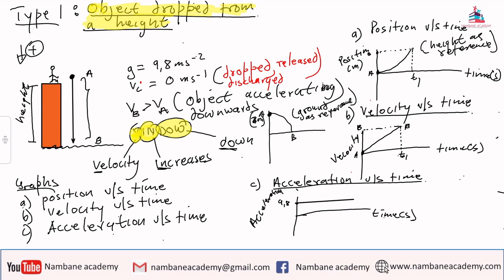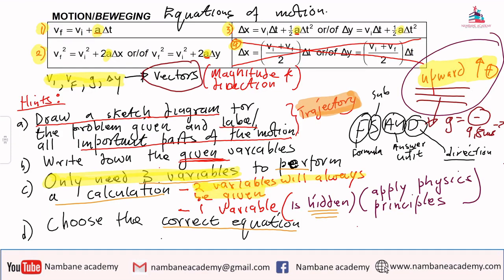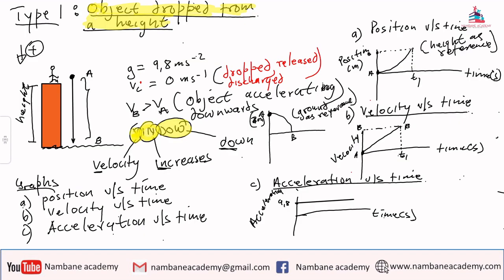I did not draw the structure before, I only wrote 'object dropped from a height.' Using the hints to say draw a sketch diagram for the problem given and label all the important parts of the motion. If it is dropped from a certain height then I must have my height of the building which is now the orange section.